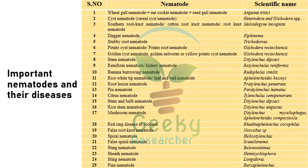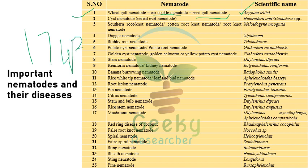First of all, we will see the scientific names of some important plant nematodes. Wheat gall nematode, wheat ear-cockle nematode, or seed gall nematode — these are all caused by Anguina tritici. This wheat gall nematode or wheat seed gall nematode was the first plant parasitic nematode to be discovered by Needham et al. in 1743.